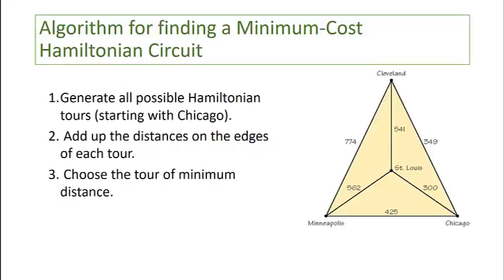Here is an algorithm for finding a minimum cost Hamiltonian circuit. We start by generating all possible Hamiltonian tours. In this example, we're going to assume we start at Chicago. We add up the distances on the edges of each tour and then simply choose the tour with minimum distance.